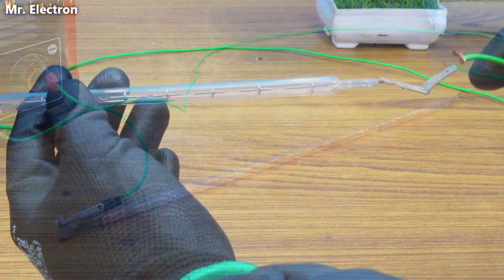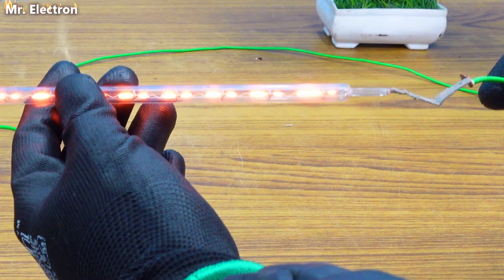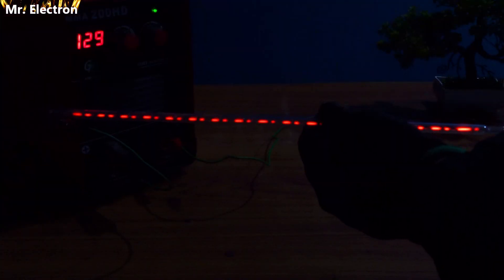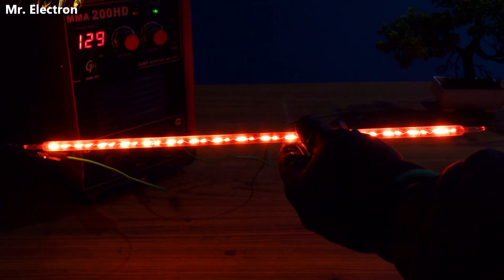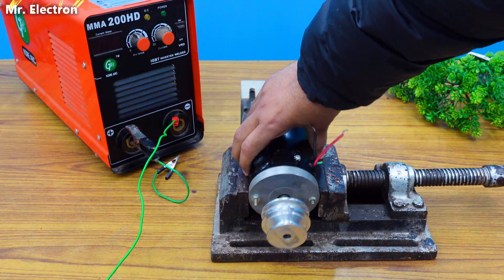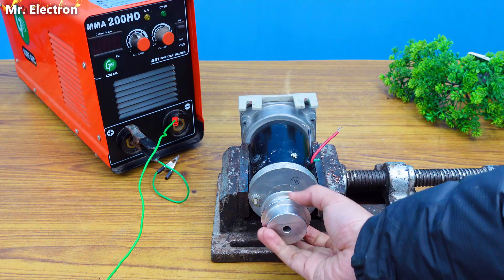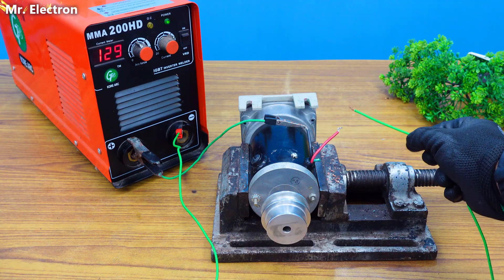Although the brightness is less because the voltage that I'm giving from the welding machine is not 220, it is only 79 volts. So now this is a 220 volts permanent magnet DC motor that I am testing.